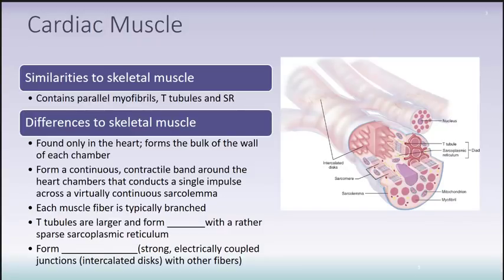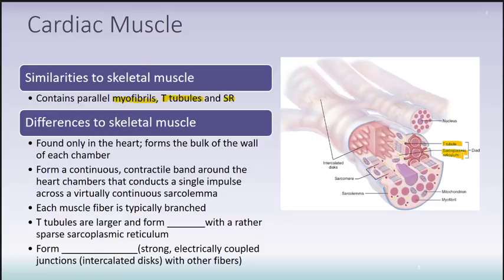This slide shows similarities and differences between cardiac and skeletal muscle. Both are striated because they both contain myofibrils — myo means muscle. They also contain T-tubules as well as a sarcoplasmic reticulum. T-tubules are like a pocket found within the plasma membrane, and when a nerve impulse travels along a muscle it travels down the T-tubule to get deeper into the muscle. The sarcoplasmic reticulum is a specialized type of smooth endoplasmic reticulum.